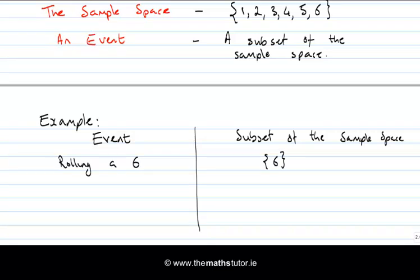That doesn't seem very exciting. What about this event: rolling an even number? To get the corresponding subset of the sample space, we just pick out the outcomes in the sample space that correspond to this event, so this set would be {2, 4, 6}.